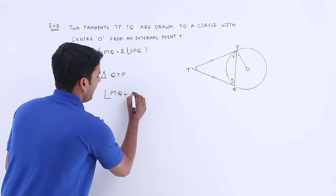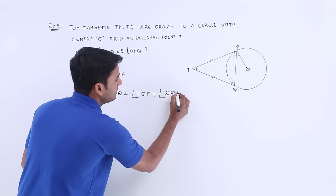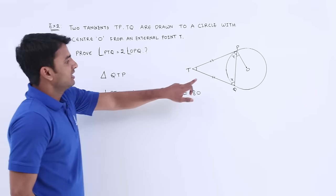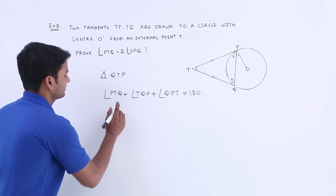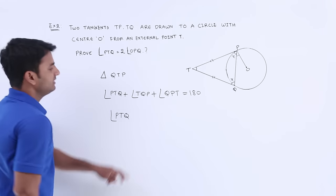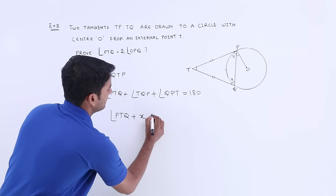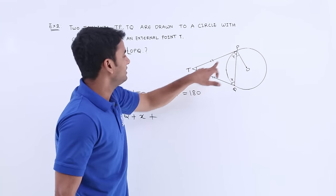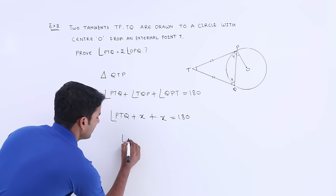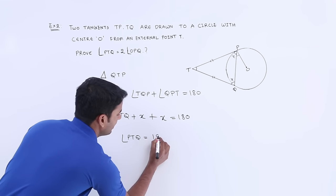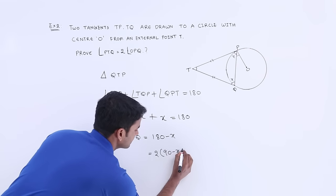Based on triangle QTP, we can write: angle PTQ + angle TQP + angle QPT = 180 degrees. Angle TQP is x and angle QPT is also x. So angle PTQ + x + x = 180 degrees, which gives angle PTQ = 180 minus 2x. We can also write this as 2 times (90 minus x). Let us consider this as equation number one.